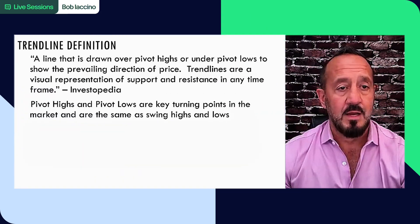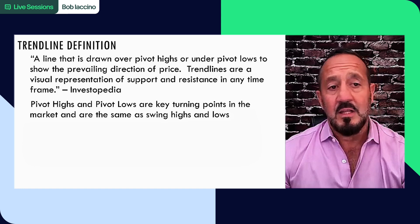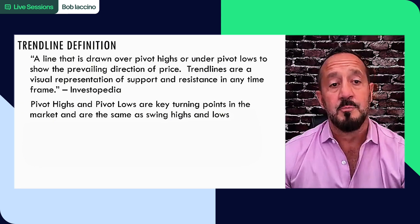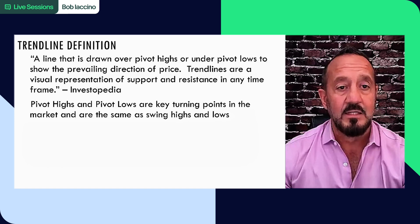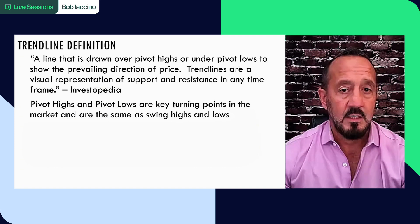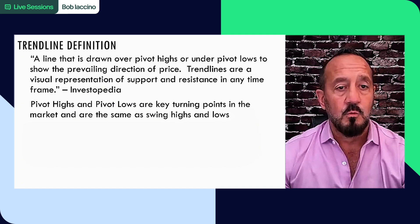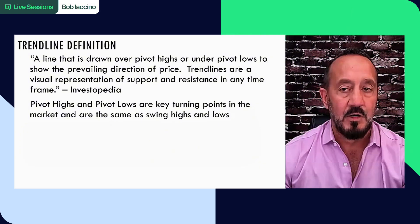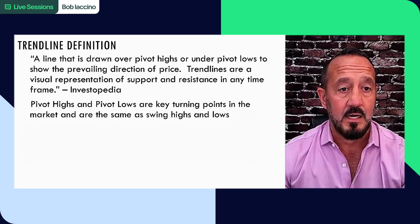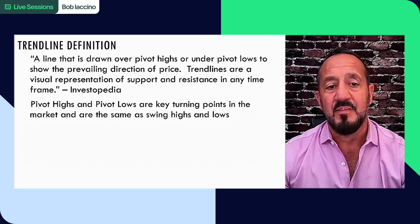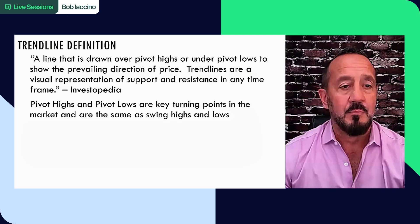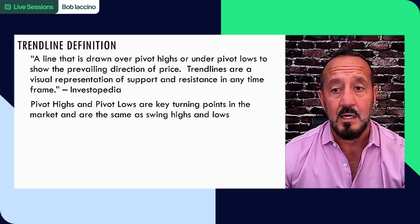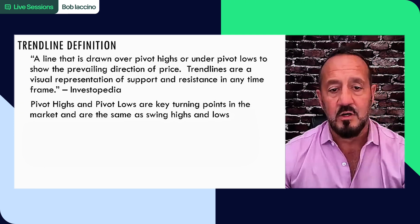Traditional trend lines. A trend line definition is a line that is drawn over pivot highs or under pivot lows to show the prevailing direction of price. Trend lines are visual representation of support and resistance in any time frame. Pivot highs and pivot lows are key turning points in the market and are the same as swing highs or swing lows. I usually call them swings.